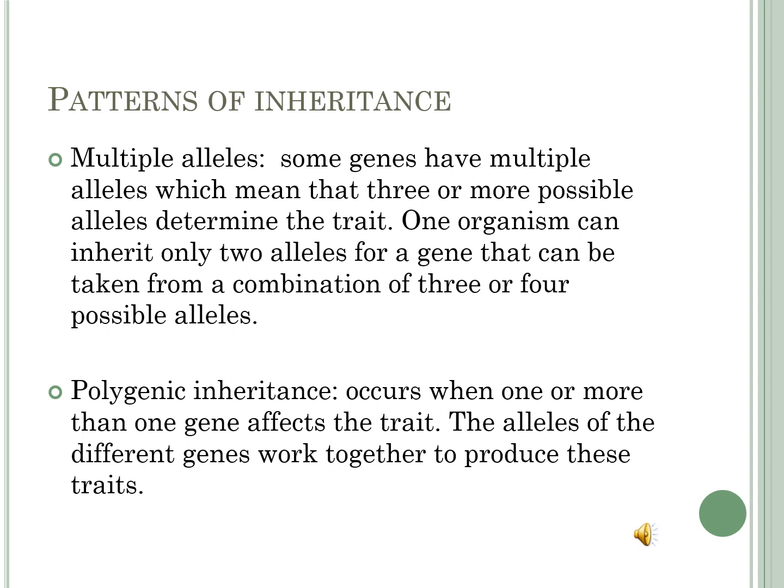Polygenic inheritance occurs when one or more than one gene affects the trait, and the alleles of different genes work together to produce these traits. For example, the height of a person is determined by many types of genes — all working together, considering the thickness of the bone, the height of the bone, the height of the neck, etc. All these join together to give the person their height. This is called polygenic inheritance.